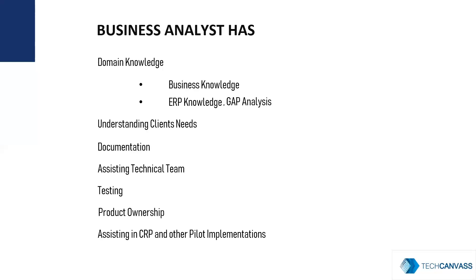Regarding product ownership: in an agile environment, the BA is the product owner. The BA needs to prepare and maintain the product backlog and call upon product backlog refinement meetings on a regular basis. The BA also assists in CRP, which means Classroom Pilot, and other pilot implementations.